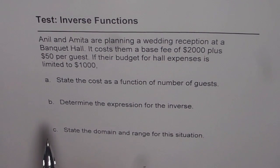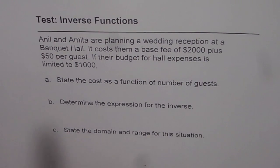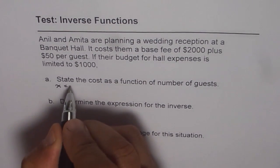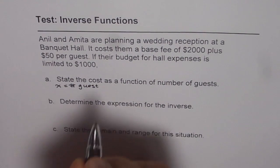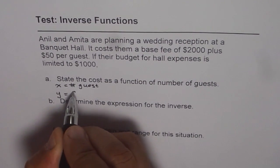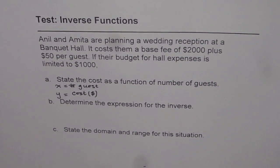Now let's start with part A, which is state the cost as a function of number of guests. We need to define the variables first. Guests, or the number of guests, is the independent variable. So let x be equal to number of guests. In that case, y is equal to cost in dollars.